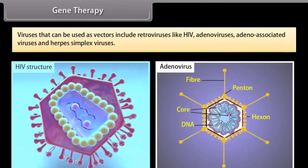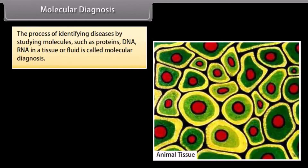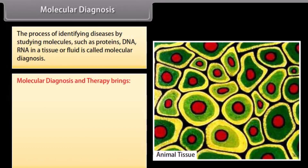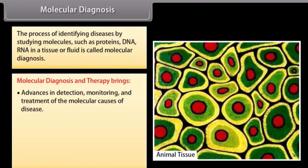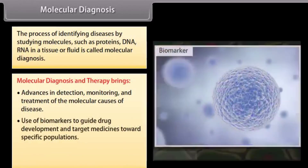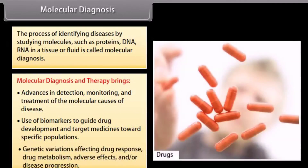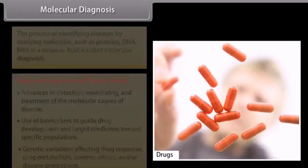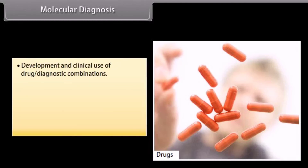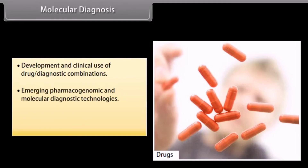Vectors also include adenoviruses, adeno-associated viruses, and herpes simplex viruses. Molecular diagnosis: the process of identifying diseases by studying molecules such as proteins, DNA, and RNA in a tissue or fluid is called molecular diagnosis. It brings advances in detection, monitoring, and treatment of the molecular causes of disease, use of biomarkers to guide drug development, genetic variations affecting drug response and disease progression, and development of drug-diagnostic combinations, including emerging pharmacogenomic and molecular diagnostic technologies.